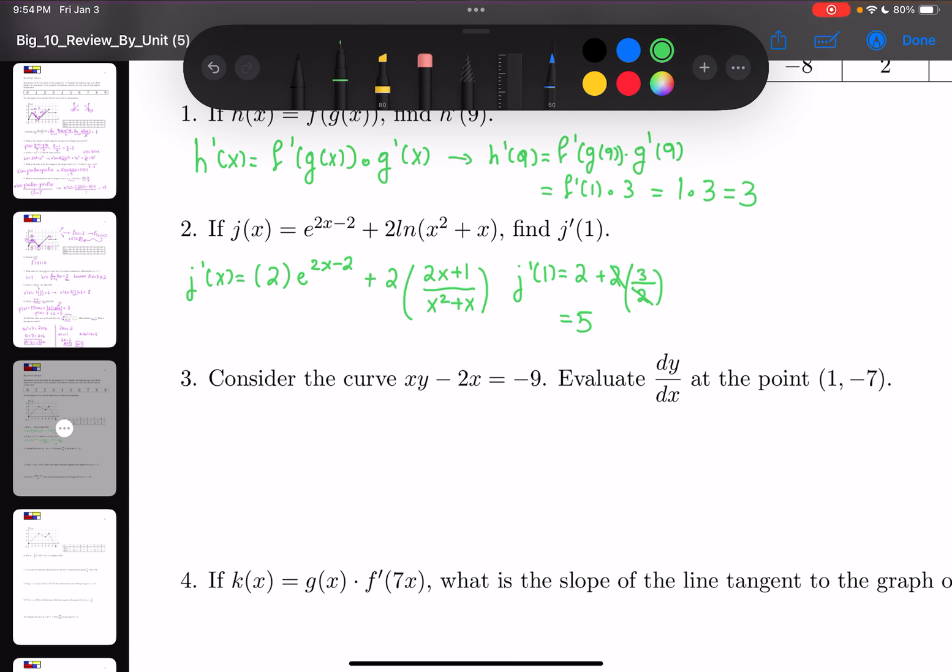To do this you can work it out however you like. So xy - 2x = -9. I would have isolated the x from the y, but you can derive it as it is.